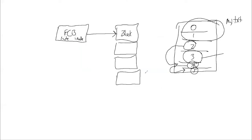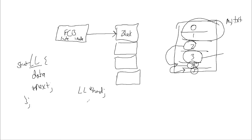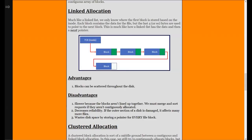Linked allocation closely mimics a linked list — a structure with data and a next pointer — where you follow head->next until you reach a null pointer indicating the end. Similarly, here we keep following next-block pointers until we reach a null block (usually zero), or we can use the size field to know how many blocks to traverse, just as with the FCB. Linked allocation solves the requirement that all blocks be contiguous, but at the cost of those disadvantages.